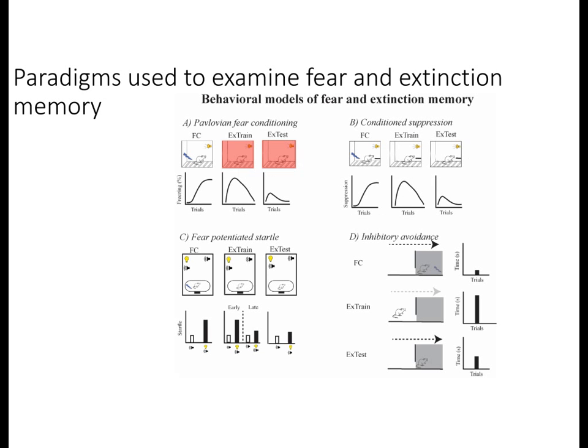These are behavioral paradigms often used to measure fear and extinction memory: A is Pavlovian fear conditioning, B is conditioned suppression, C is fear potentiated startle, and D is inhibitory avoidance.